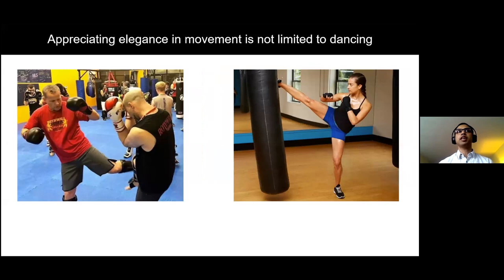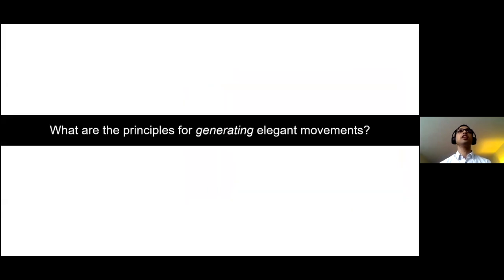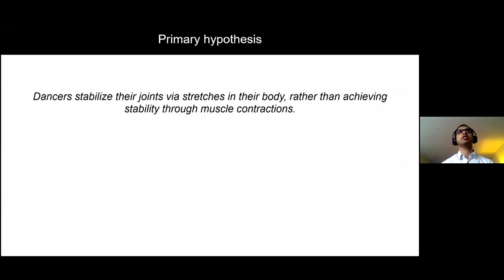Just by looking at a movement, even if you're not trained in that specific form, you can still tell which one seems better. There's some sort of intuitive thing. So what are the principles for generating elegant movements? The main hypothesis is that dancers stabilize their joints via stretches in their body rather than achieving stability through muscle contractions. Let me break that down.